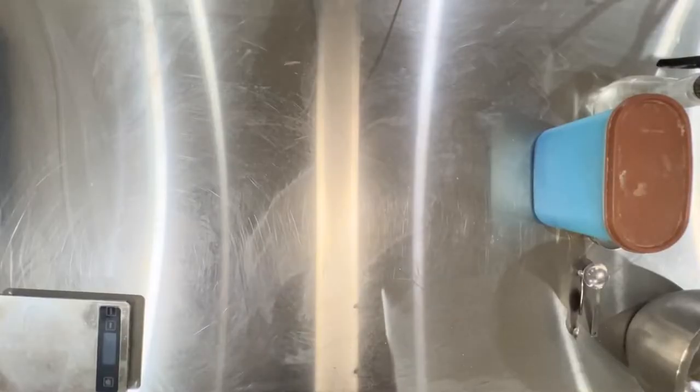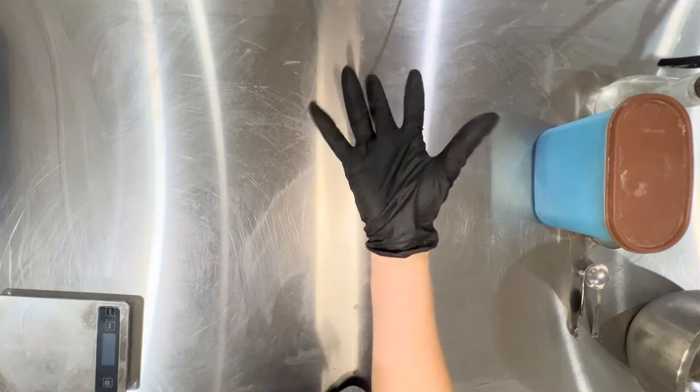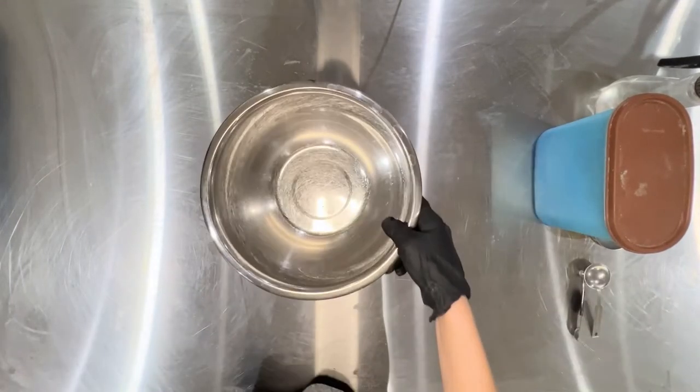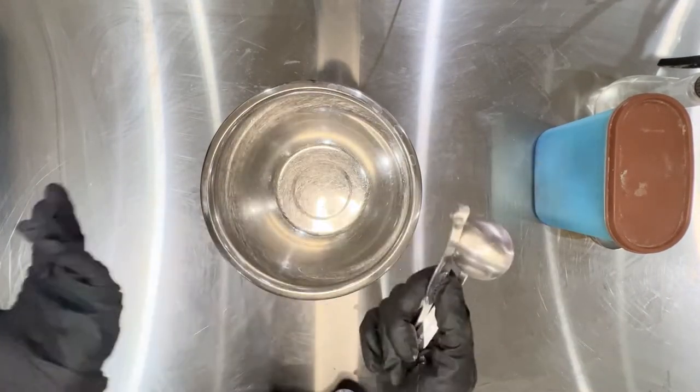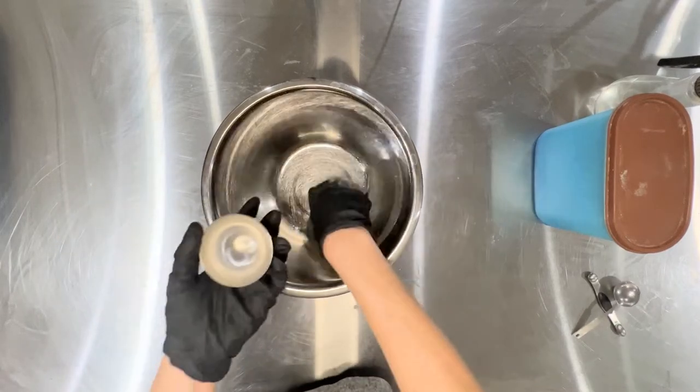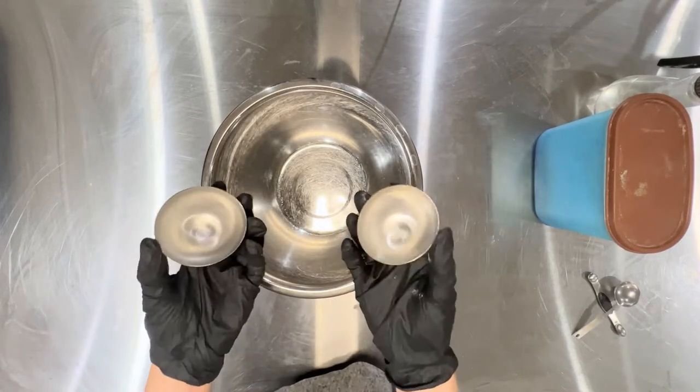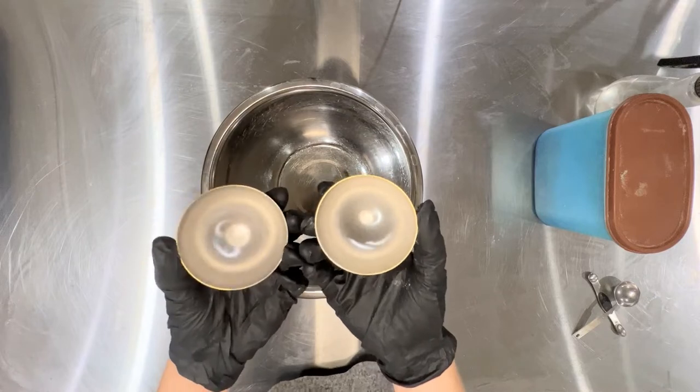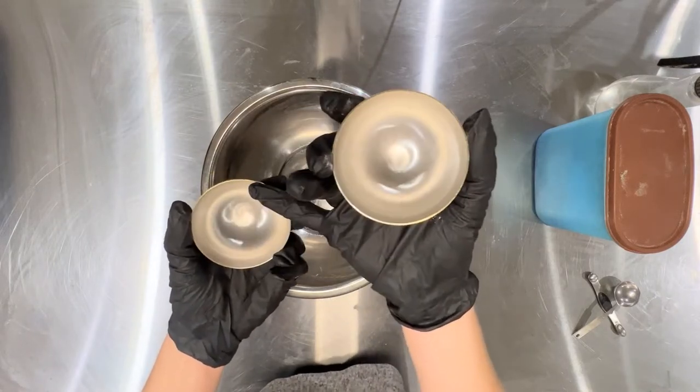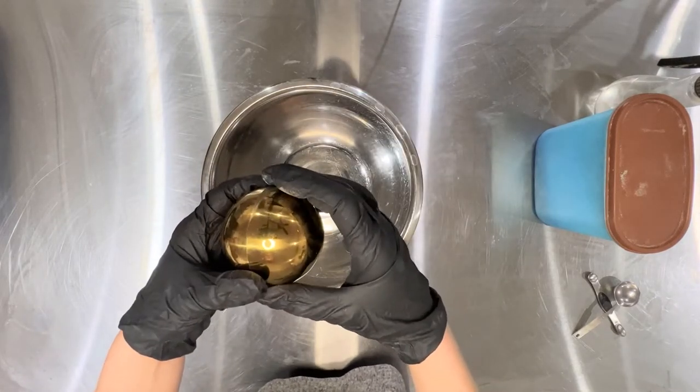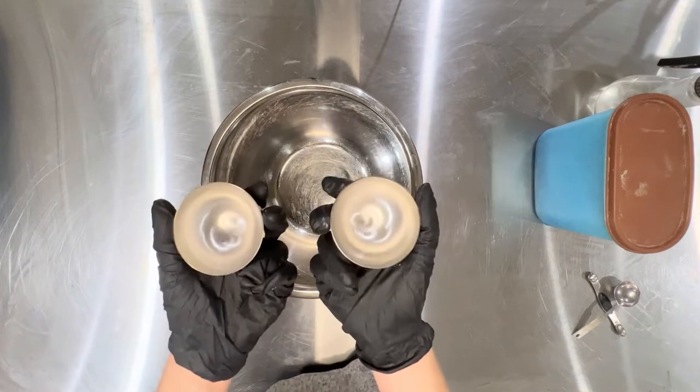All right, first things first. Gloves, scale, bowl, teaspoons, tablespoons, and of course a bath bomb mold. This is a two and a half inch, so that's two and a half inch diameter. Usually equals about a seven ounce bath bomb.